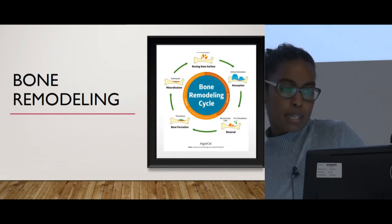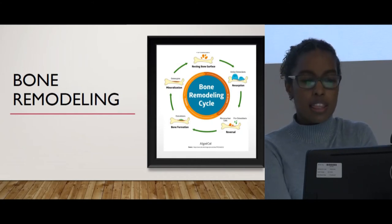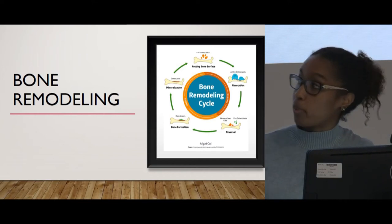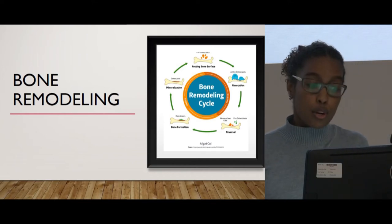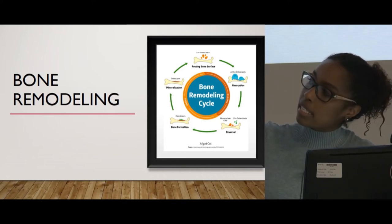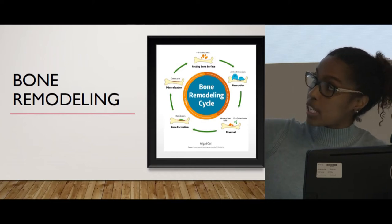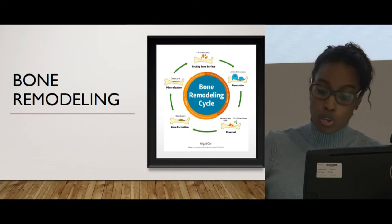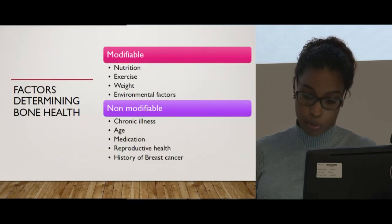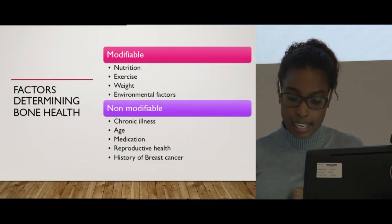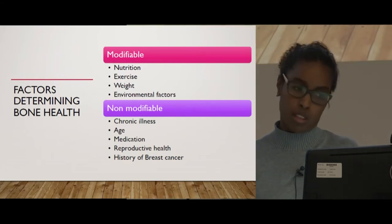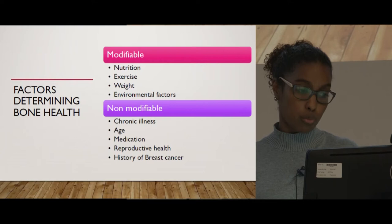This is an excellent visual representation of what happens to your bone mass as you age. Women actually reach the peak of their bone mass in early adulthood, with quite a steady decline after the menopause. This is exactly why we need to talk about bone health. We're going to go into the modifiable and the non-modifiable factors that affect women.